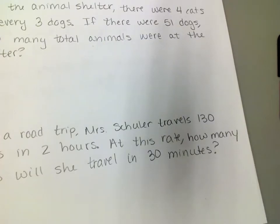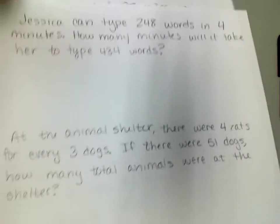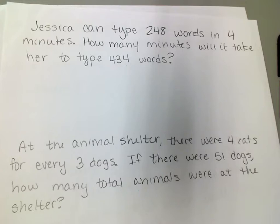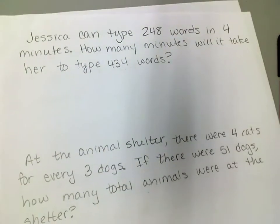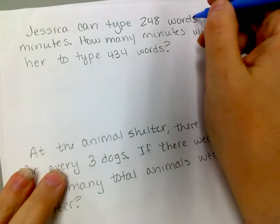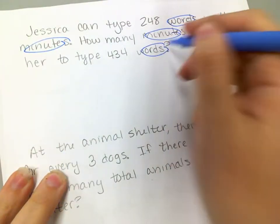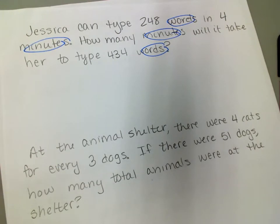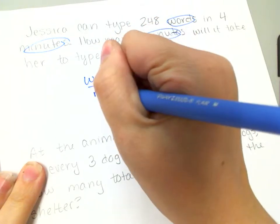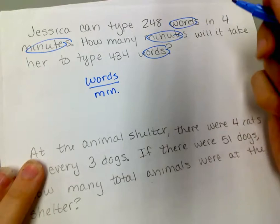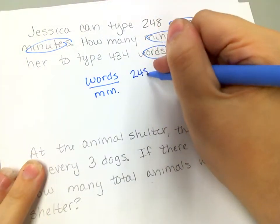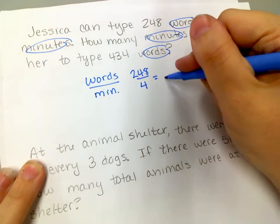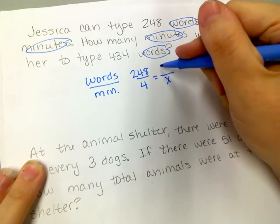Okay, so we're going to start with this problem right here. Jessica can type 248 words in four minutes. How many minutes will it take her to type 434 words? Okay, so what I'm going to do is I am going to set up that proportion, and these labels are your best friends. If I'm talking about words in minutes, and how many minutes with words. So it does not matter if you put words or minutes on top, as long as you're consistent in both of your ratios to make them equivalent. So if I put words over minutes, again, it doesn't matter which one's on top, as long as it's the same for both of them. When I had 248 words, that was in four minutes, and I want to know how many minutes—so that's what I'm solving for, there's my x—if I had 434 words.